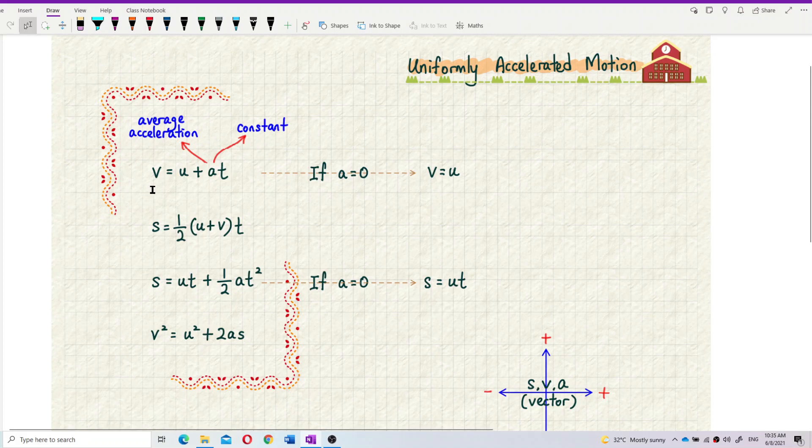V equal to U plus AT, S equal to half U plus VT, S equal to UT plus half AT square, and V square equal to U square plus 2AS.